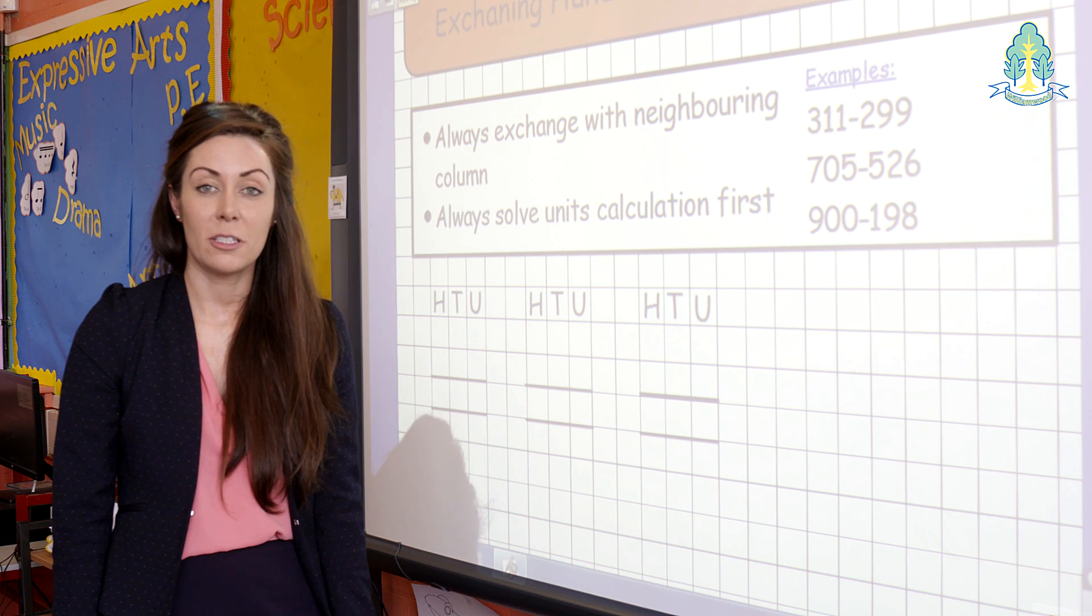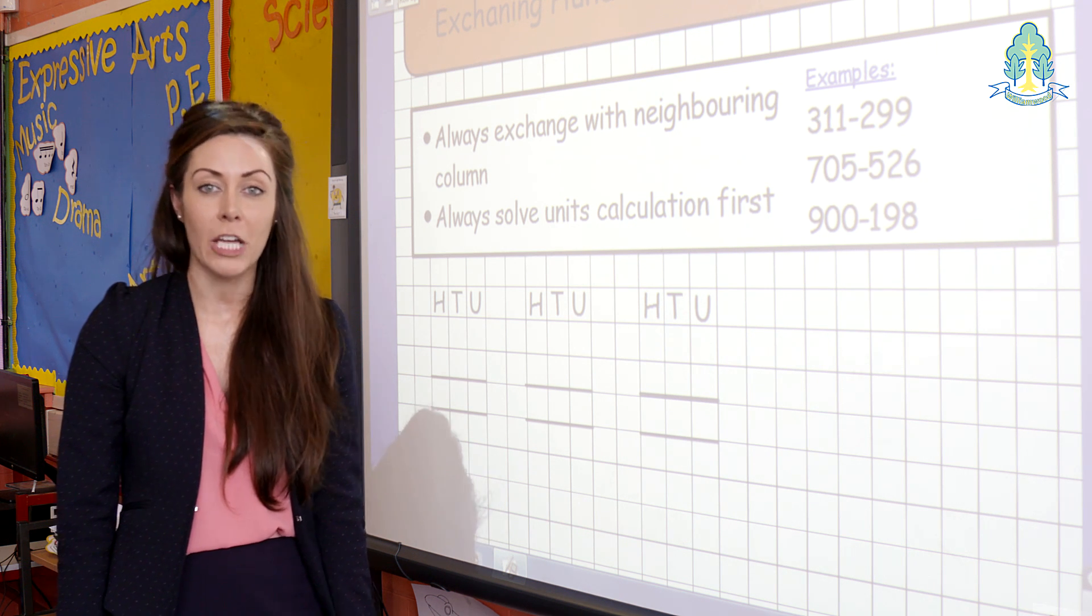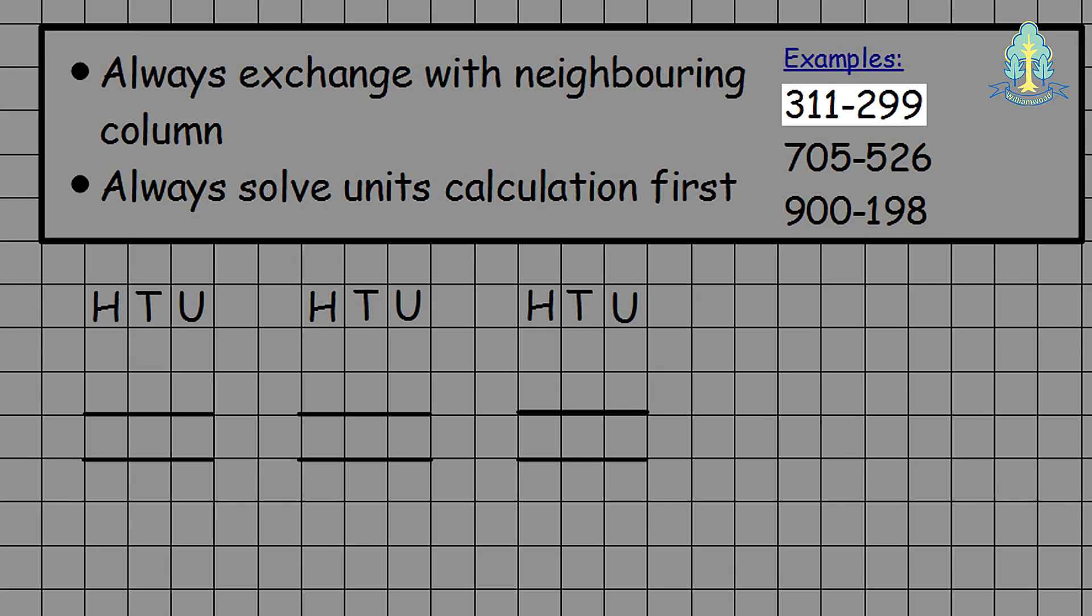Pupils continue to subtract hundreds, tens, and units with more challenging values. For example, 311 take away 299. Pupils continue to work from right to left, beginning with the units. 1 take away 9 we can't do so we exchange from the tens column leaving 0 tens and giving it to the units column giving you 11 units. 11 take away 9 is 2.